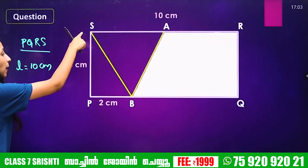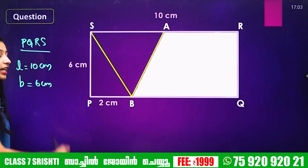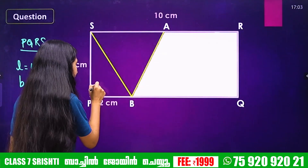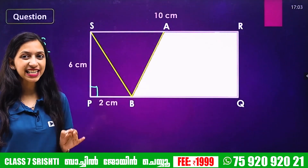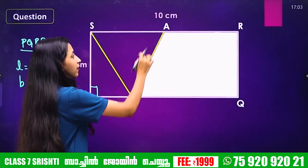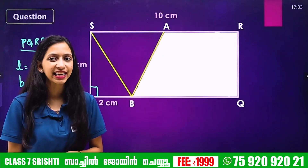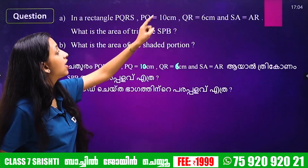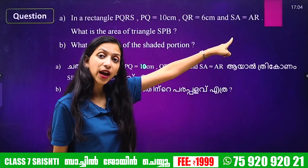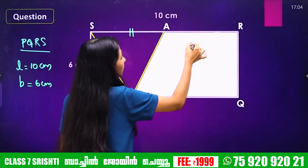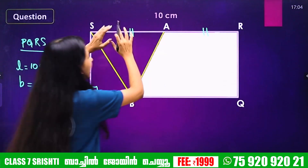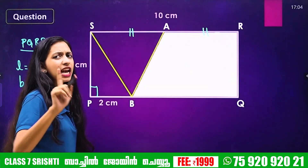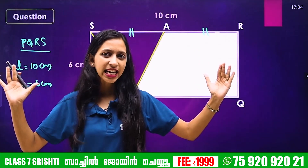Rectangle PQRS: length PQ is equal to 10 cm, breadth QR is equal to 6 cm, and SA is equal to AR. SA and AR are equal in length, meaning A is the midpoint of SR, dividing it into two equal parts.